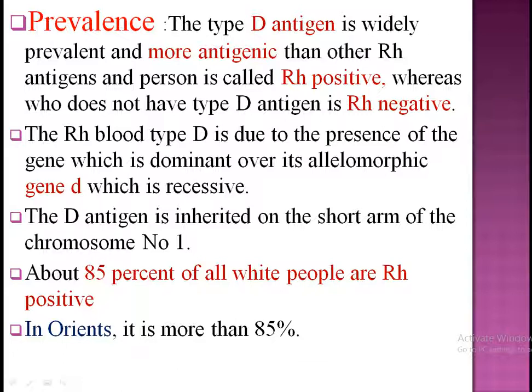I am repeating this point — not just positive and negative — but I am saying that the D antigen is the most prevalent. So the RH D antigen is mostly present, and if it is present that will be RH positive. If it is not present, that will be RH negative.